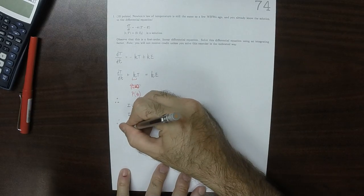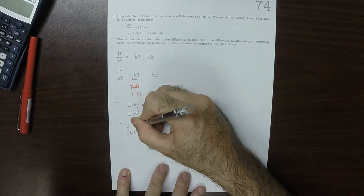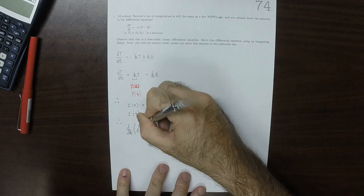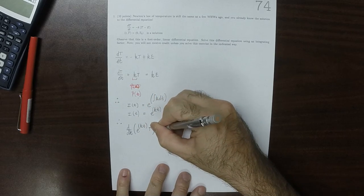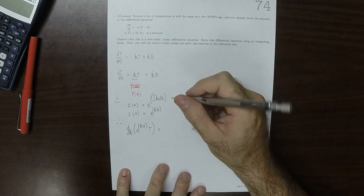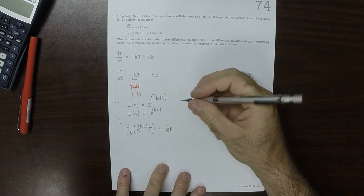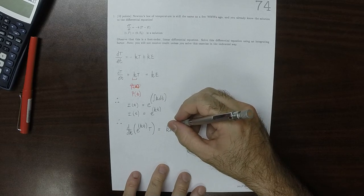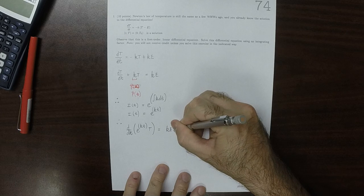Therefore the derivative of the integrating factor times the integral of K T times the integral of K T is Q times the integrating factor exponential K T.